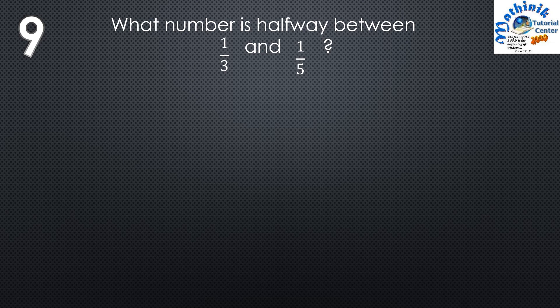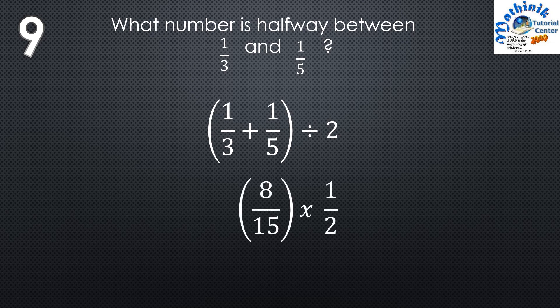Question number 9: What number is halfway between one third and one fifth? When asked for a number halfway between two numbers, we add them and divide by 2 — that is, we find the midpoint. So: (one third plus one fifth) divided by 2. One third plus one fifth equals 8 over 15. Then 8 over 15 times one half gives 4 over 15.